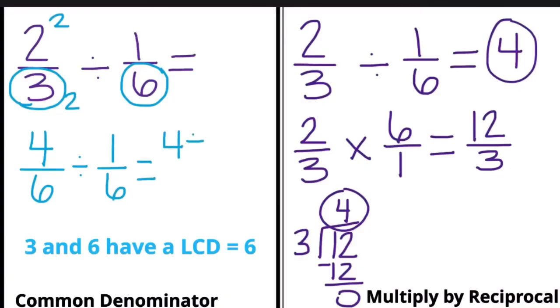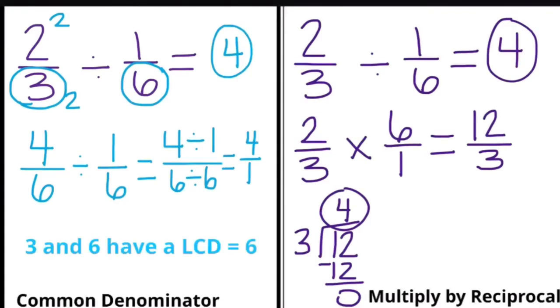Looking at just the numerators we have four divided by one. The denominators show six divided by six. This math gives us four over one and we know that any fraction with one as the denominator is a whole number. So both methods give us an answer of four. You choose the one that's easiest for you.